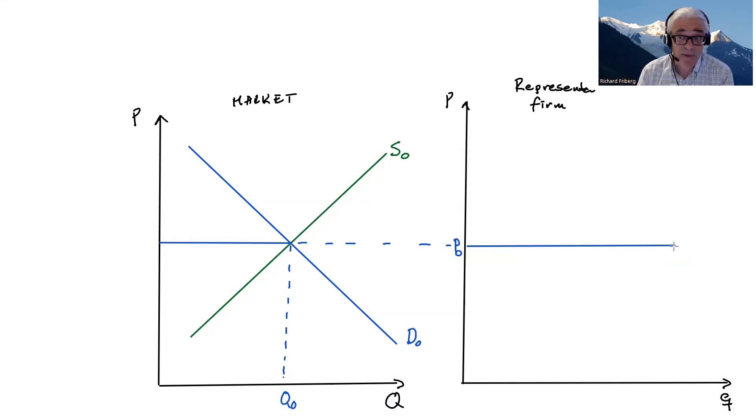Meaning at the optimal quantity, at the profit maximizing quantity, we know that price is equal to the average total cost. So let's draw the average total cost curve like this for that firm. And we also know that quantity set is such that price equals marginal cost.